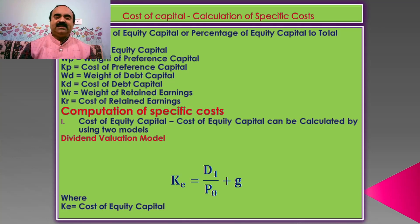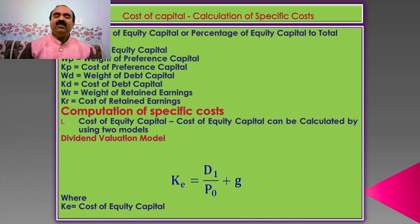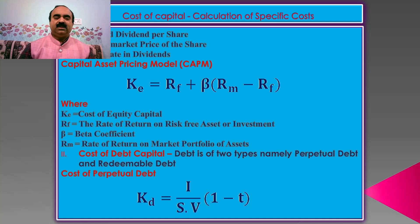Let us now deal with the second step, that is computation of specific costs. 1. Cost of equity capital. Cost of equity capital can be calculated by using two models: they are the dividend valuation model and the CAPM model. According to the dividend valuation model, KE = D1/P0 + G, where KE is cost of equity capital, D1 is expected dividend per share, P0 is current market price of the share, and G is equal to growth rate in dividends.